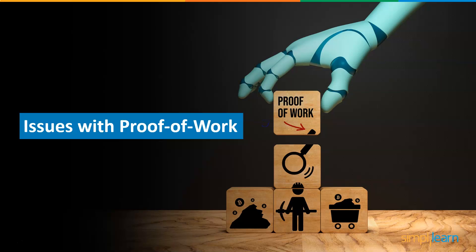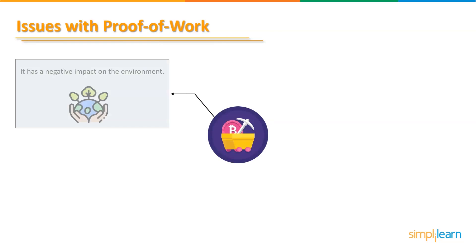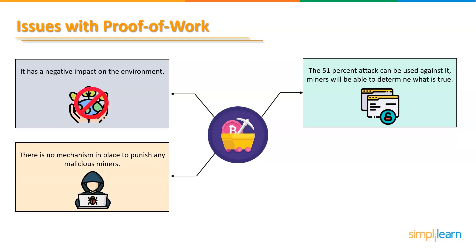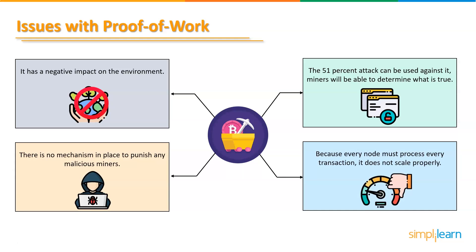There are some major issues with proof of work. First, it has a negative impact on the environment. Second, it is vulnerable to 51% attacks — if miners gain control of 51% of the hashing power, they can determine what is true. Third, aside from the enormous cost, there is no mechanism to punish malicious miners. Fourth, because every node must process every transaction, it does not scale properly, and while sharding may boost efficiency, it also reduces security.